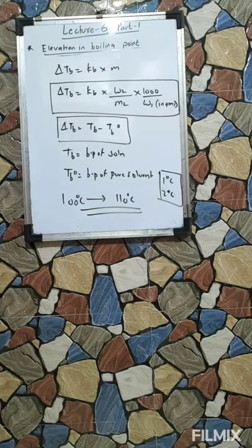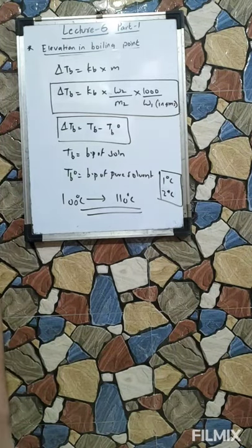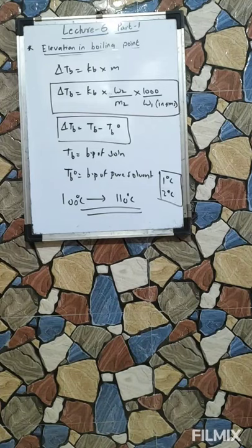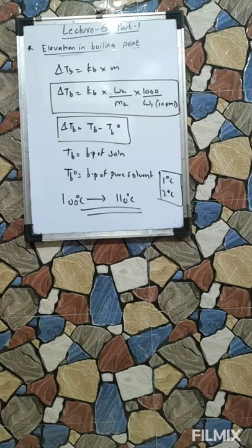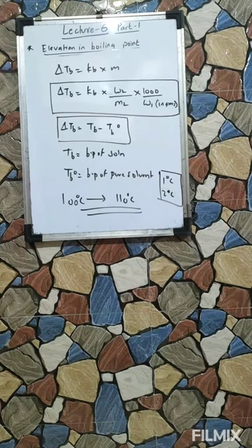So this was our second colligative property. In the next lecture, part 2, we will do numericals purely based on elevation in boiling point. I want you to read the textbook once, look at the graphs given, and then re-watch this video if needed. Submit DPP 10 questions 1 to 9, and also submit the numericals on lowering of vapour pressure. So far only Aditya has submitted those — I want the rest of the students to solve and submit as well.